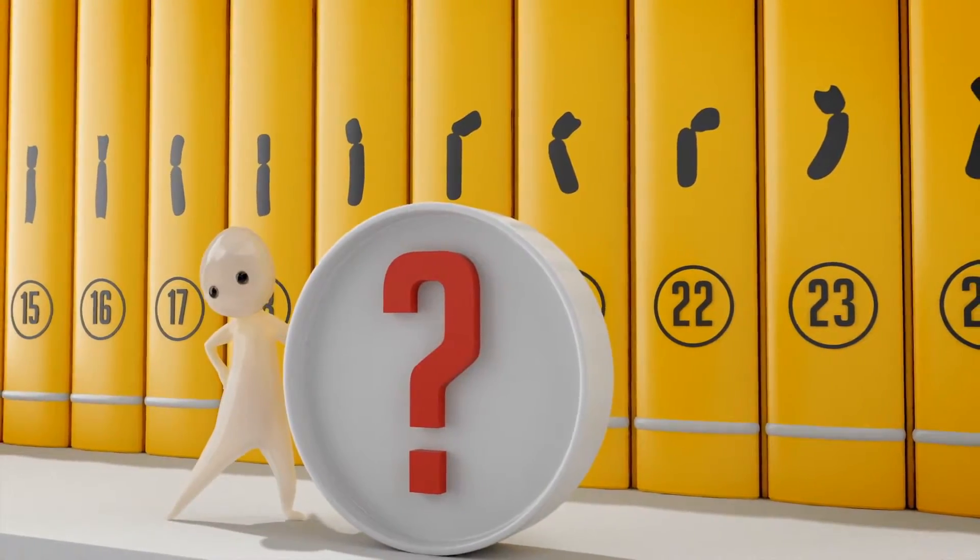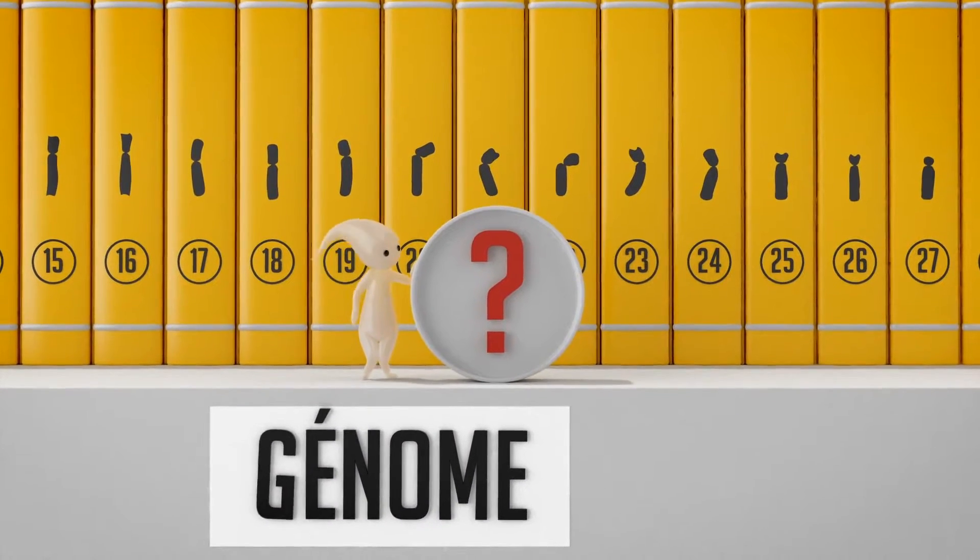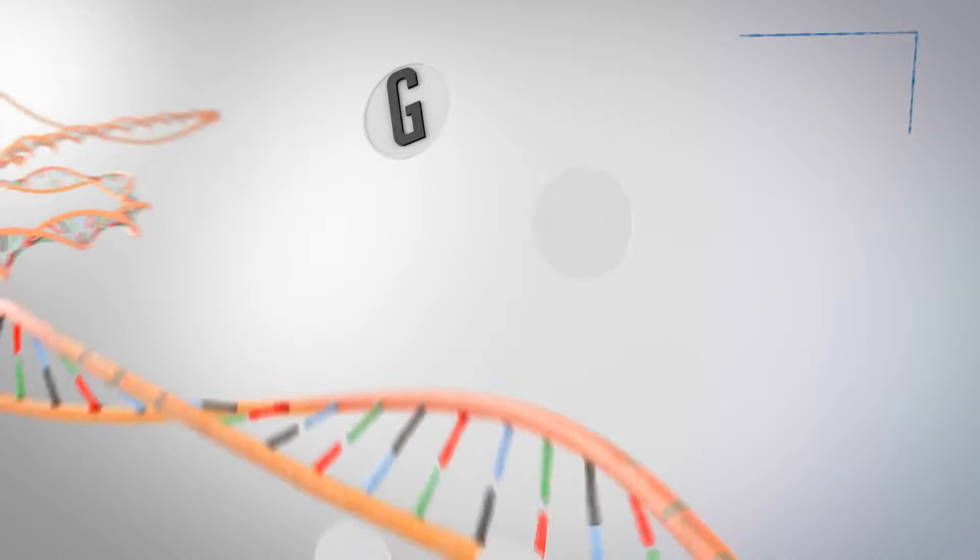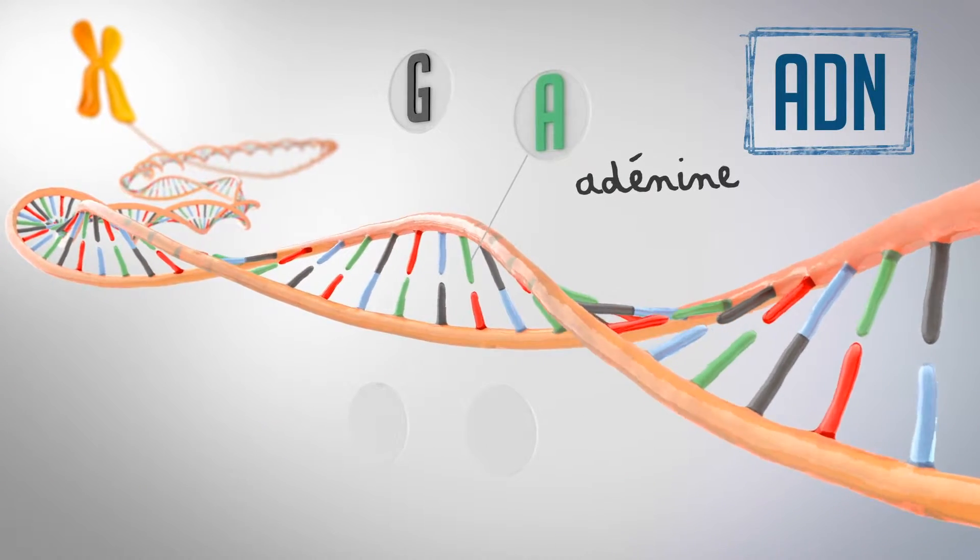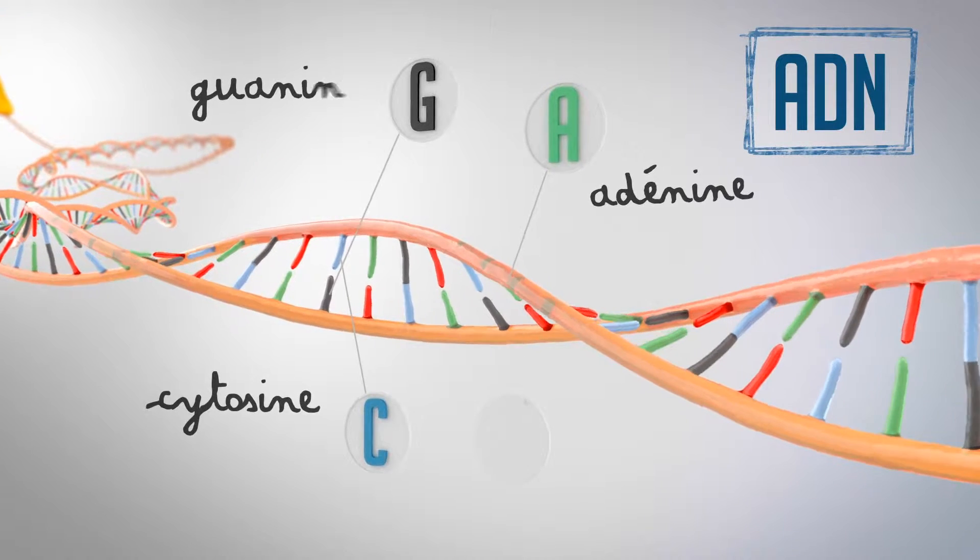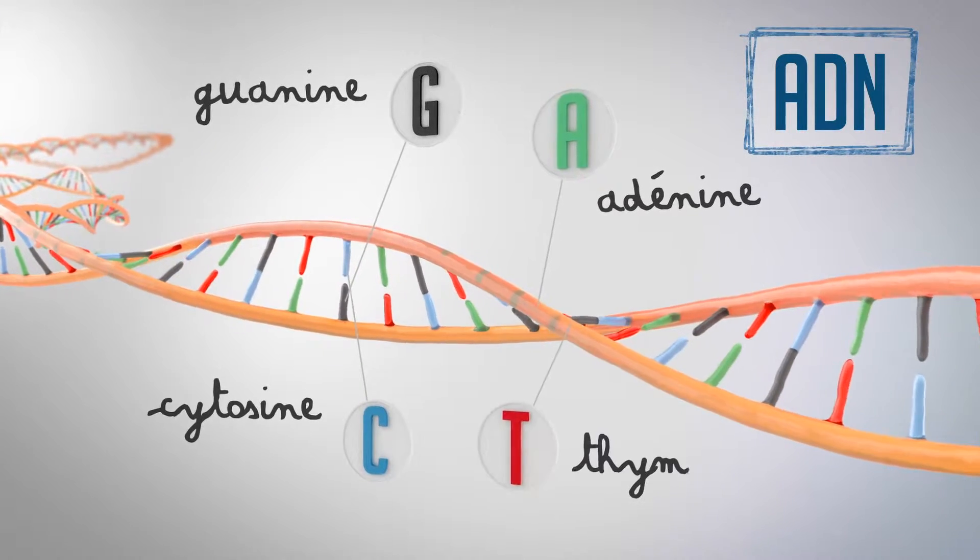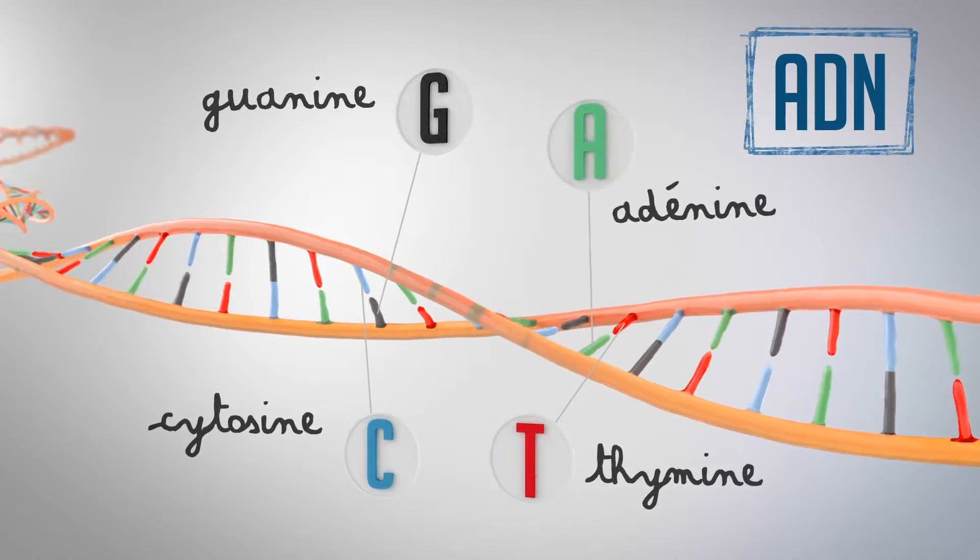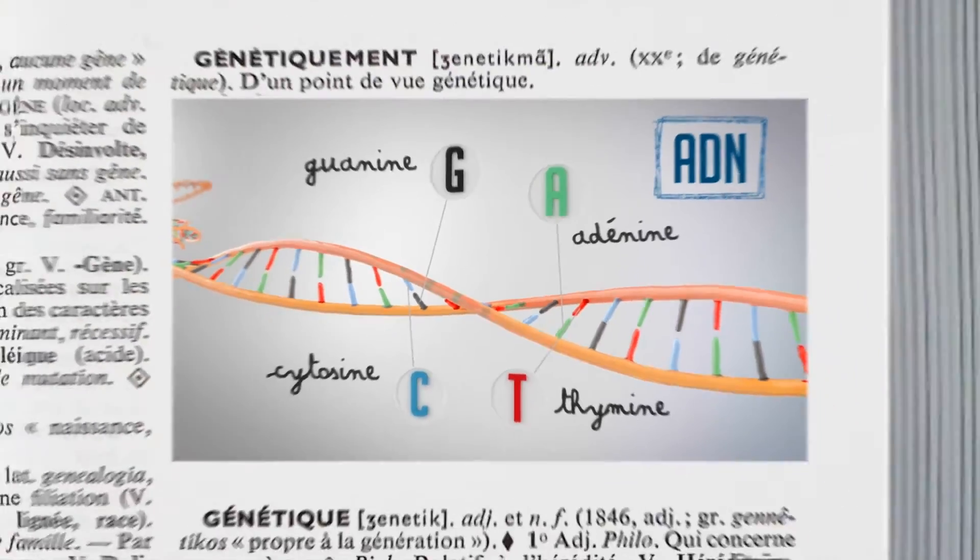Ces chromosomes constituent l'ADN. Ils s'écrivent dans un alphabet de 4 lettres. A pour adénine, C pour cytosine, G pour guanine et T pour thymine. Organisés en paires, ce sont des bases appelées nucléotides.